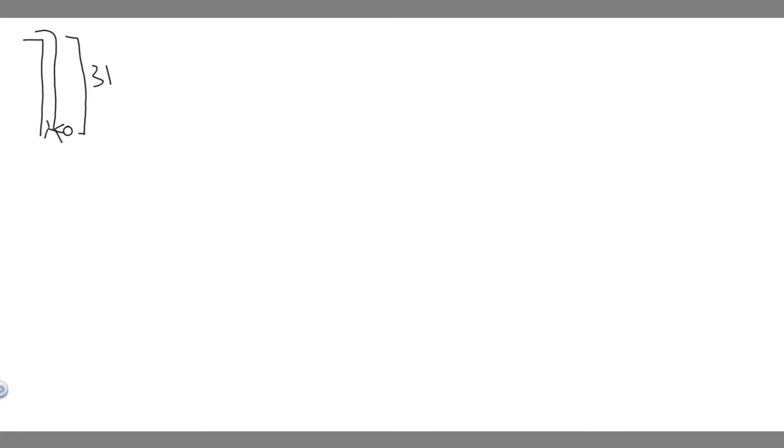The first thing we should do is draw an image of what's going on. Imagine this is the bridge the bungee jumper is jumping off, and this is the bungee cord. Here's our person, and we know they're going to fall a total of 31 meters — so this whole distance is 31 meters. The mass of our person is 55 kilograms, and the bungee cord is 12 meters long when unstretched.